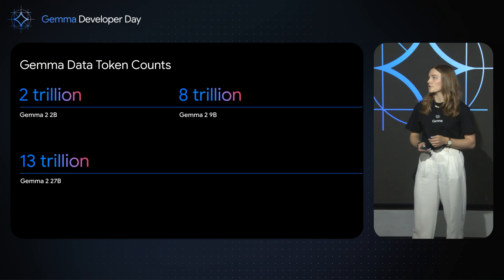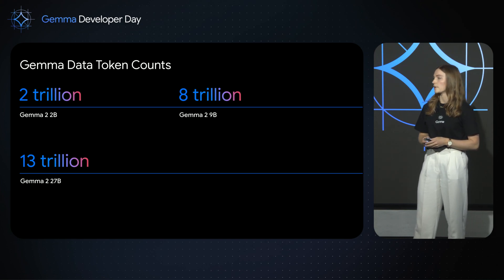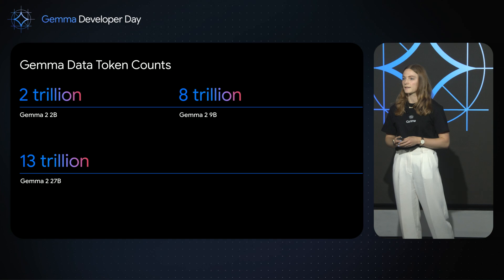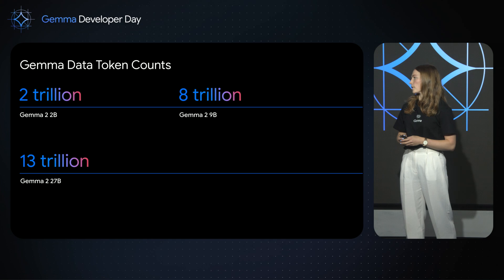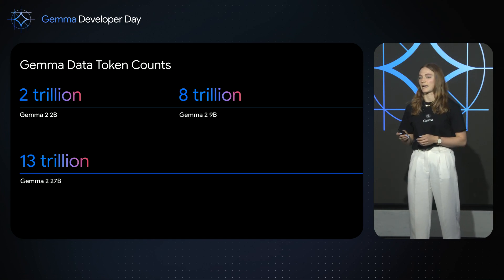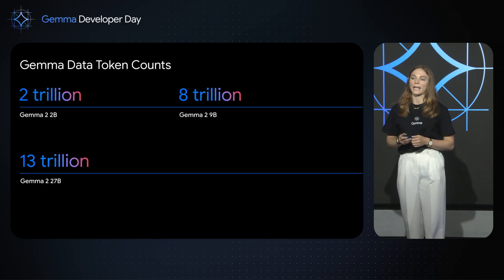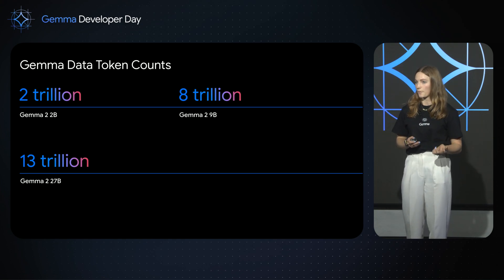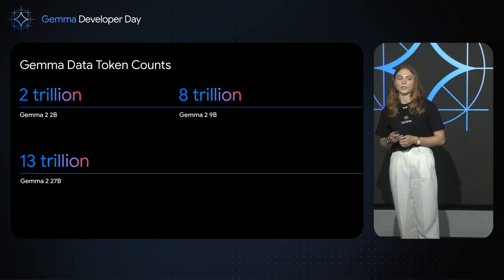We released Gemma 2 in three model sizes: a 2 billion parameter model trained on 2 trillion tokens, a 9 billion parameter model trained on 8 trillion tokens, and a 27 billion parameter model trained on 13 trillion tokens. In each of these model sizes we curated a specific mixture of data to ensure adequate coverage over different domains of information and to bring the best out of our data to ensure we were releasing the strongest models.